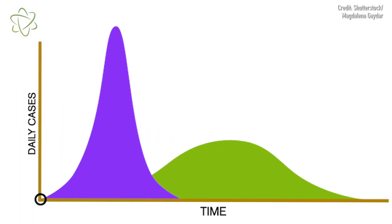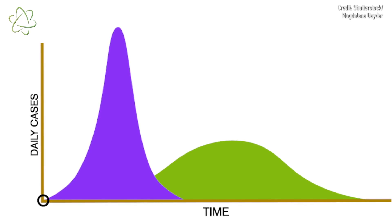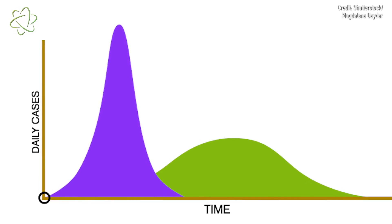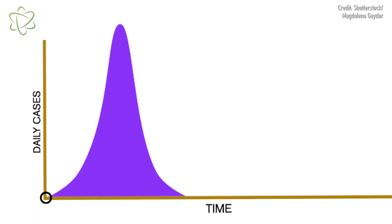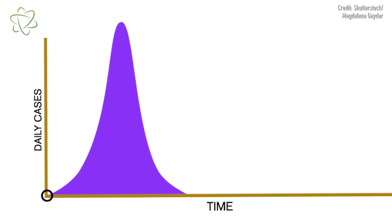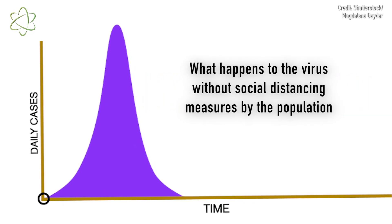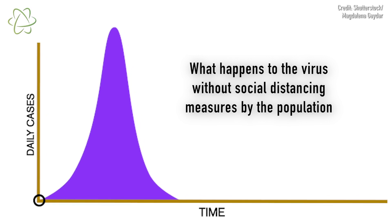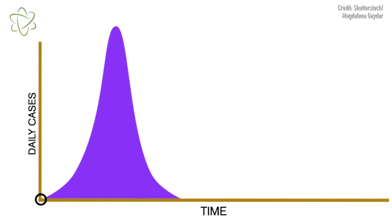The dark purple curve on the left shows a pandemic outbreak where governments have failed to slow the infection rate with measures like quarantines, social distancing, and widespread testing. In this scenario, the number of cases grows exponentially, meaning the total number of infections continues to double at a consistent rate — one week there are 5,000 cases, the next week 10,000, the next week 20,000, and so on.